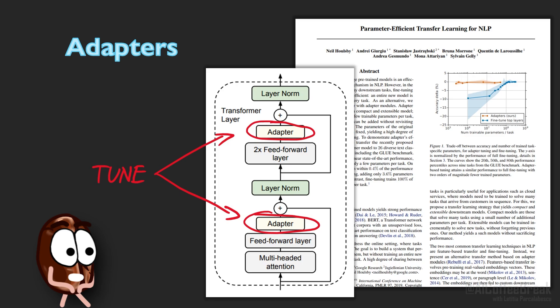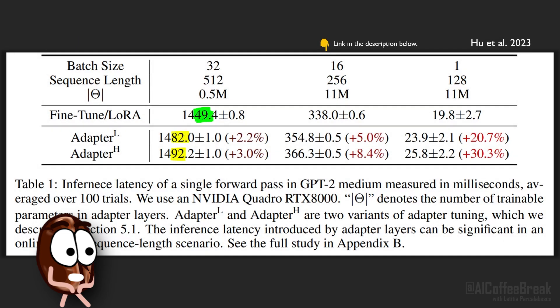But the problem is that large networks are usually parallelized on hardware, while adapter layers must be processed sequentially. This means that during inference adapters introduce a noticeable latency.